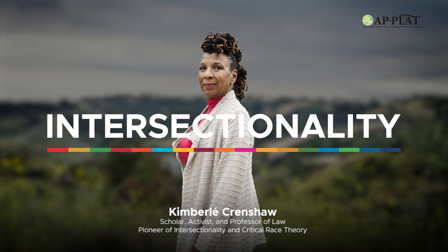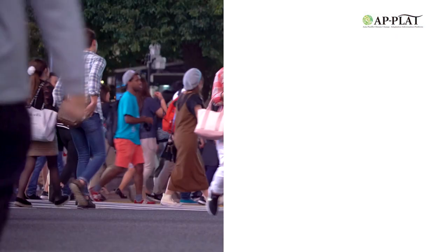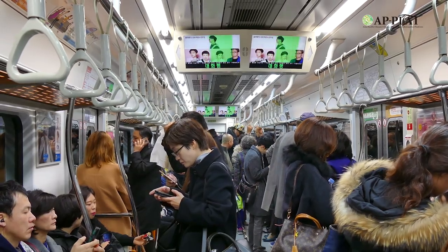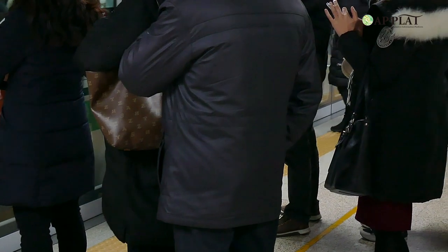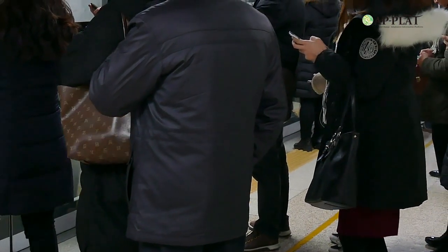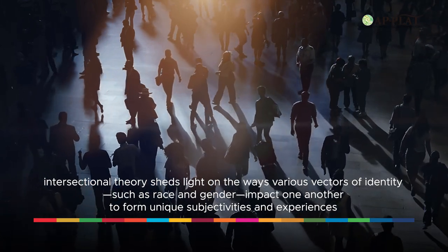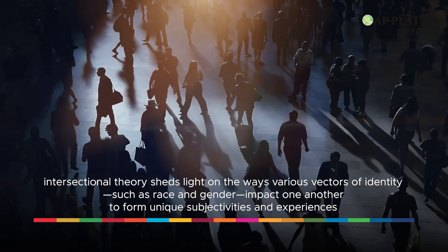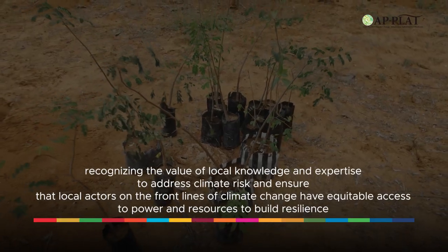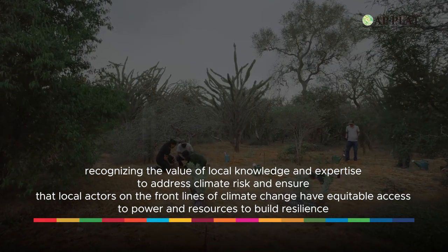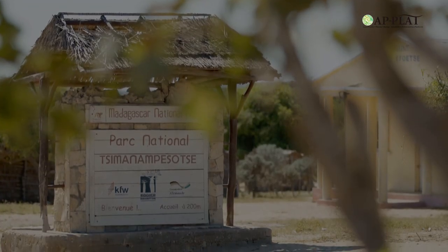Intersectionality is a concept coined in the 1980s by Kimberly Crenshaw and describes the interconnected nature of social categories or identities, such as race, class, and gender, as they create overlapping and independent systems of experience, discrimination, or disadvantage. Rather than isolating one identity category, privilege, or other points of marginalization, intersectional theory sheds light on the ways various vectors of identity, such as race and gender, impact one another to form unique subjectivities and experiences. Locally-led adaptation is defined by the World Resources Institute as recognizing the value of local knowledge and expertise to address climate risk and ensure that local actors on the front lines of climate change have equitable access to power and resources to build resilience.